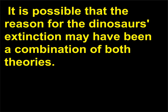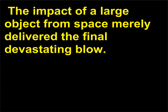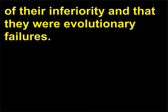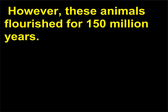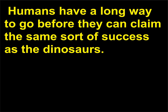It is possible that the reason for the dinosaurs' extinction may have been a combination of both theories — the dinosaurs may have been gradually declining, and the impact of a large object from space merely delivered the final devastating blow. The fact that dinosaurs became extinct has been cited as proof of their inferiority and that they were evolutionary failures. However, these animals flourished for 150 million years. By comparison, the earliest ancestors of humanity appeared only about 3 million years ago. Humans have a long way to go before they can claim the same sort of success as the dinosaurs.